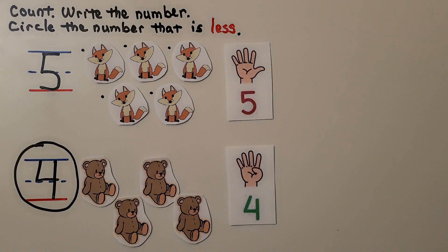And in counting order, the number that is less comes first. We write 1, 2, 3, 4, 5. 4 comes first, then comes 5. So 4 is less than 5.